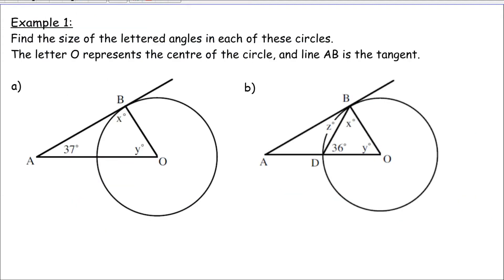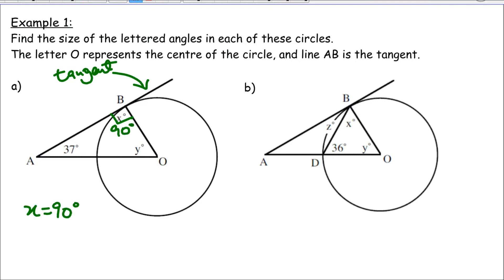Let's now apply this in problem solving. Example 1: find the size of the lettered angles in each of these circles. Let O represent the center of the circle, and line AB is the tangent. In the first case, what we have is a tangent, which means this angle here will be 90 degrees, so X is 90 degrees. Then we can find Y: Y will be equal to 180 minus 90 plus 37, which means Y will be equal to 53 degrees.